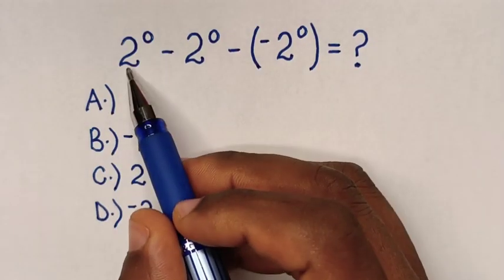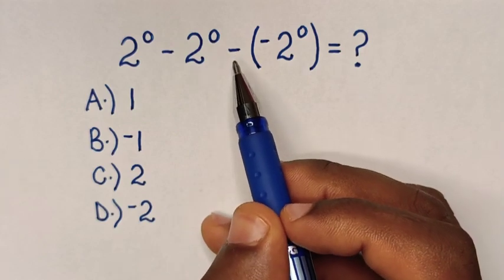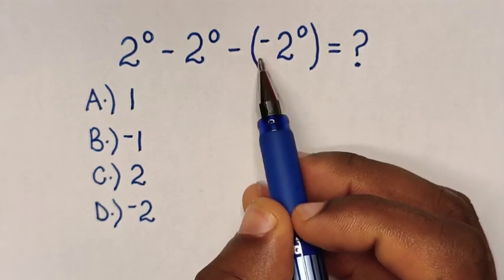Hello, how to solve 2^0 - 2^0 - (-2^0) = ?